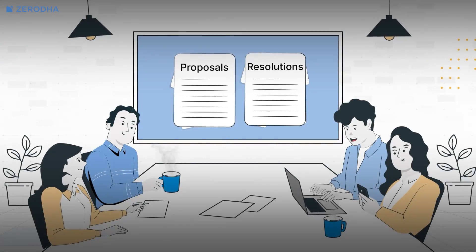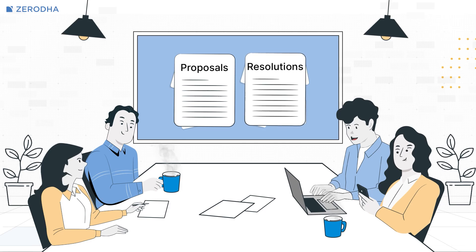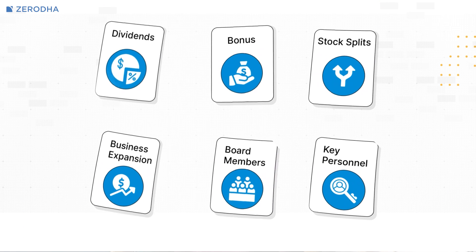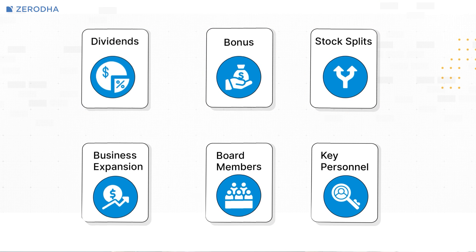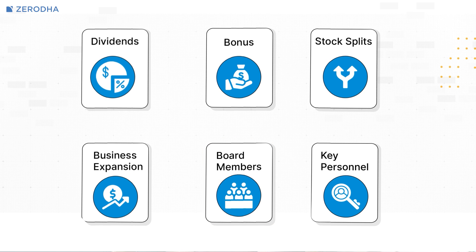During the normal course of business, companies introduce various proposals and resolutions that can have a material impact on the company. These proposals can include corporate actions such as dividends, bonus, stock splits, etc., business expansion plans, the appointment of board members, changes in key personnel managing the company, and much more.